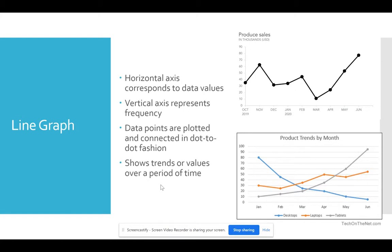You can also use a line graph with quantitative data. The benefit of a line graph is it helps you to see a trend or possibly a pattern within the data. The horizontal axis would correspond to your data values. The vertical is your frequency.